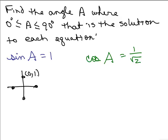And that would be right here at 0, 1. That's where the Y value is 1. So, you'd have 1 over 1. So, what angle is this? That would be 90 degrees.